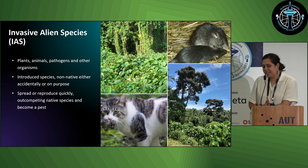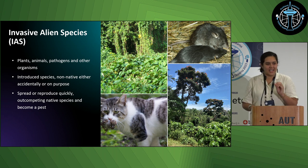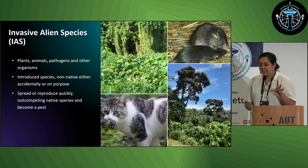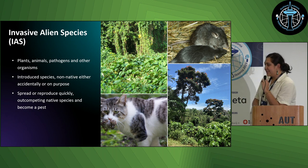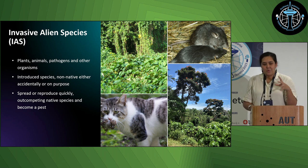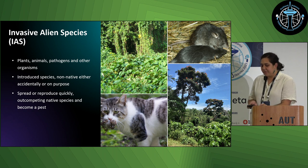Invasive species are plants, animals, pathogens — anything that's actually doing harm to the environment. They can be introduced species; they're non-native. This means they're spread either on purpose or accidentally. They can spread and reproduce quickly, and they really out-compete native species and become a pest and a real problem in the Pacific.